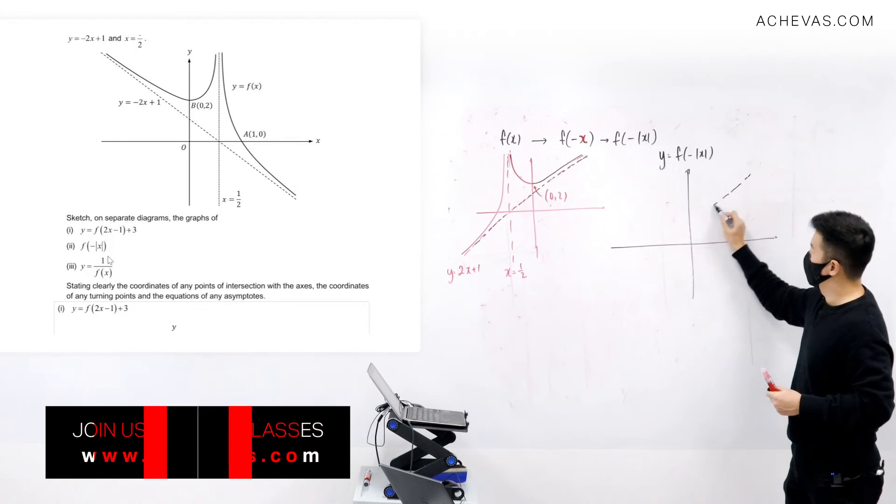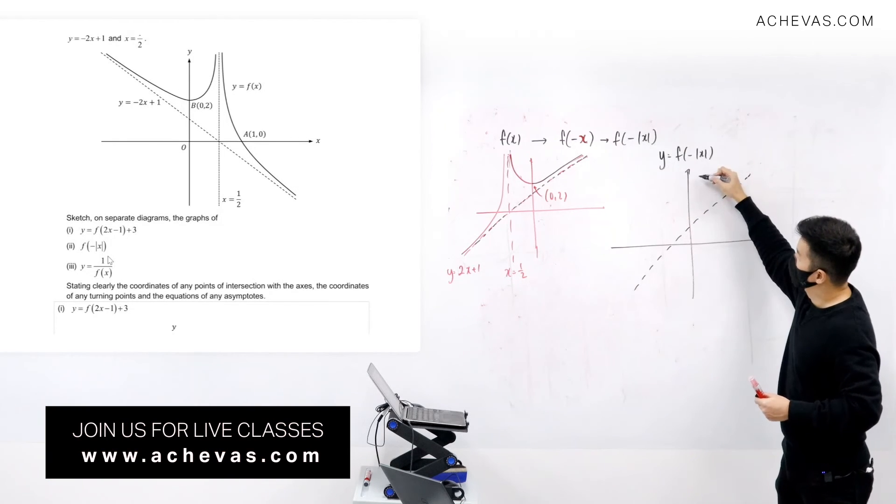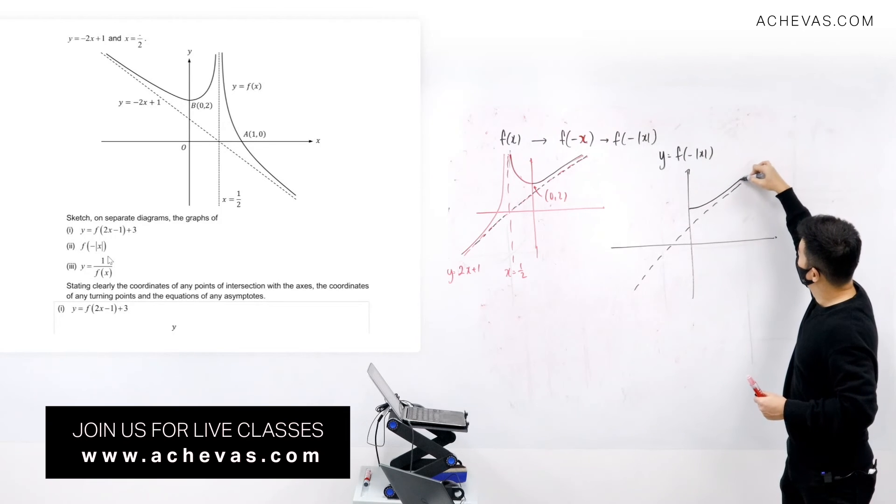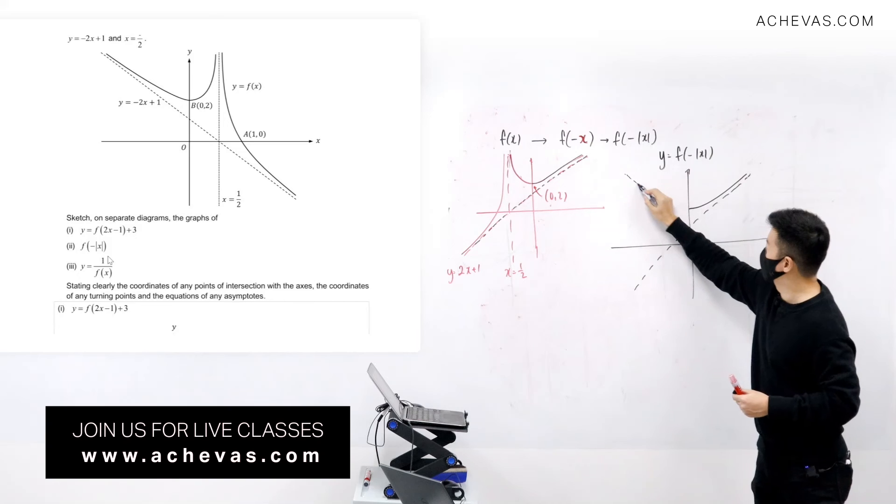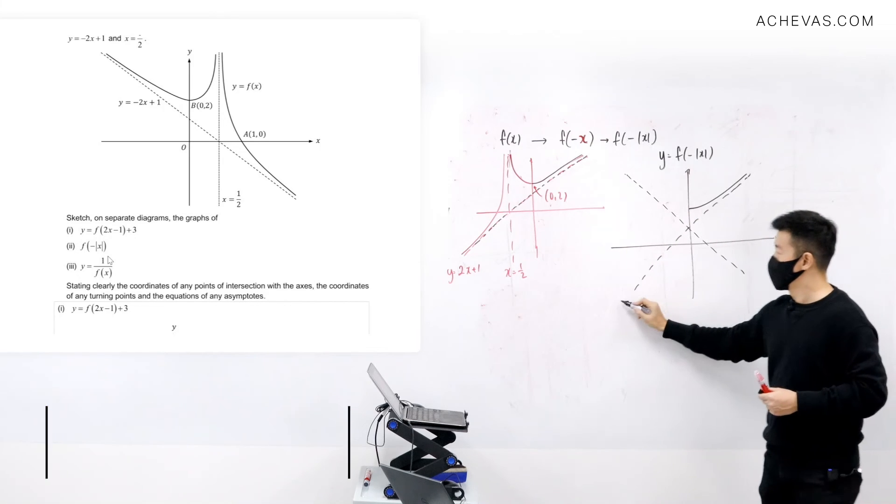And I will have this. And this part is going to be reflected over. So I'm going to draw the other oblique asymptote first. So this will be y equals 2x plus 1.